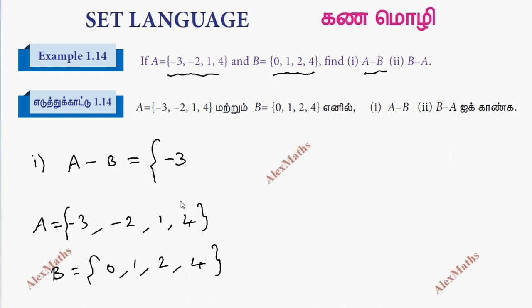0 is not in A, so we exclude it. 1 is common — cut. 2 is in B — cut. 4 is in B — cut. So A minus B equals {-3, -2}.